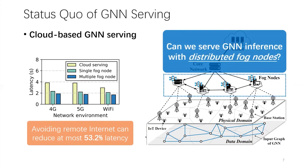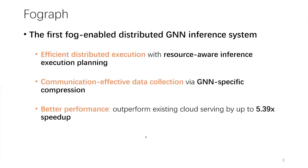This motivates us to consider: can we serve GNN inference with distributed fog nodes rather than remote cloud? Our answer is yes. We propose FogGraph, the first distributed GNN inference system over heterogeneous fog nodes. FogGraph addresses the question with two key designs. First, we devise an inference execution planning strategy to decide an efficient graph data placement based on available computation and communication resources. Second, we develop a novel GNN-specific compression technique to reduce the data collection overhead. Overall, FogGraph can outperform existing cloud serving by up to 5.39 times latency speedup.